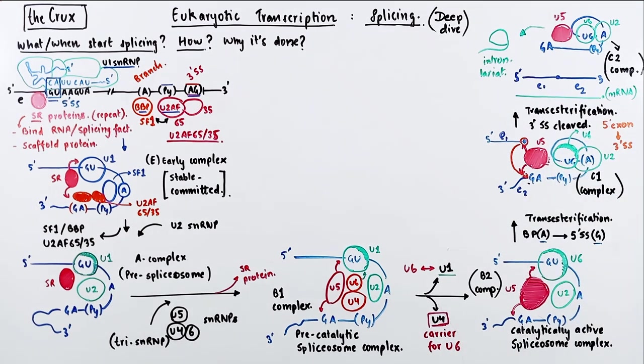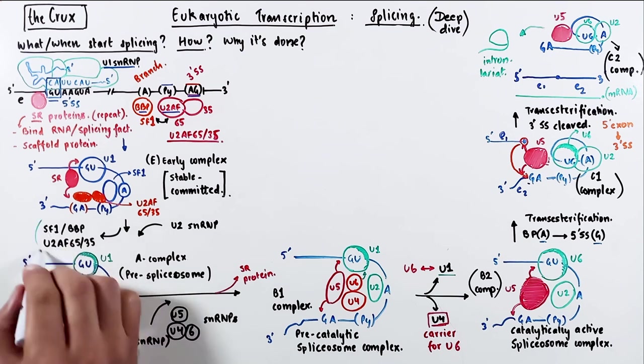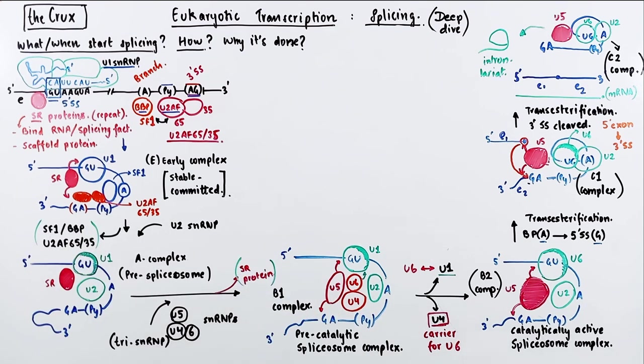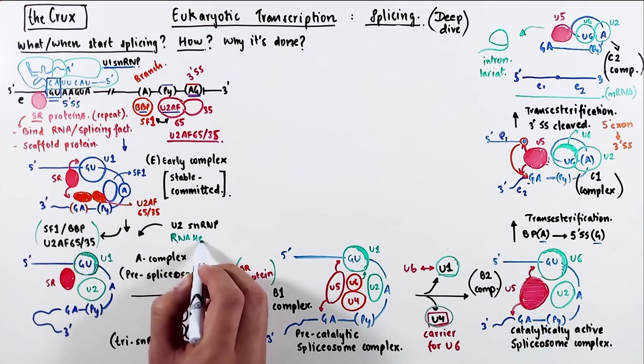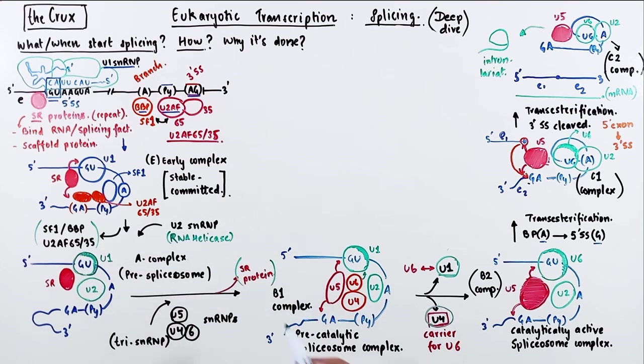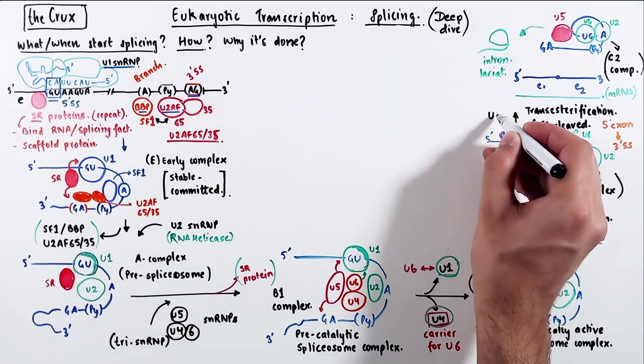Now, to fill in some gaps that I've left behind, these steps where SF1, U2AF, SR protein, and U1, U4 was removed, these steps depend primarily on the activity of special RNA helicases. I haven't drawn them out, for simplicity.